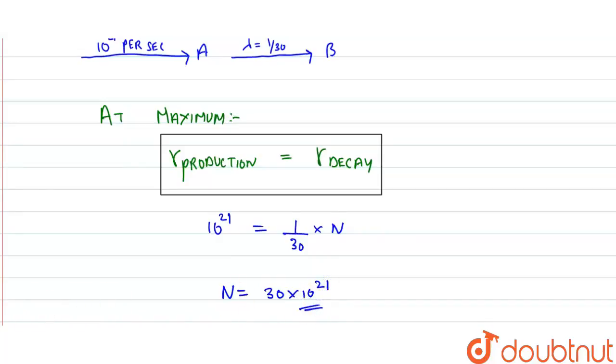This is our required answer. The value of N equals 30 times 10^21, which is the maximum number of nuclei for A. Thank you.